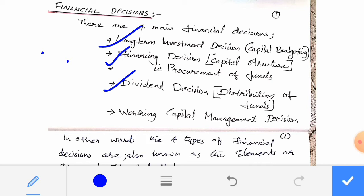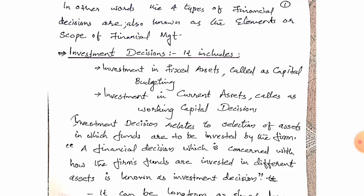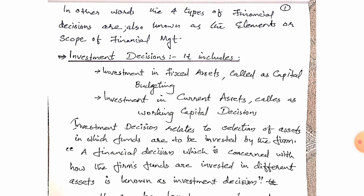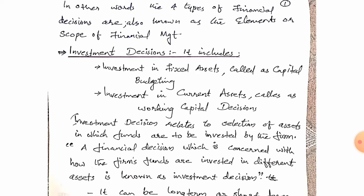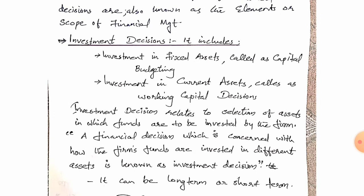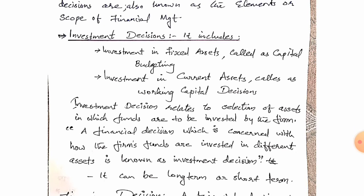The last one is Working Capital Management Decision, which is the Short Term Investment Decision. So there are four main financial decisions, which are also known as the Elements or Scope of Financial Management.